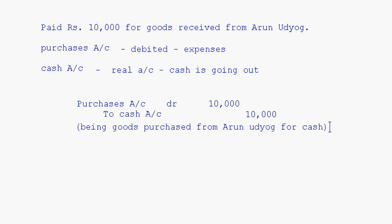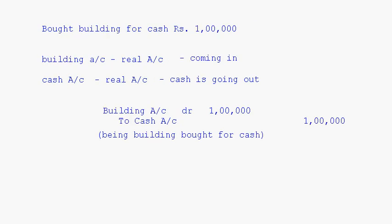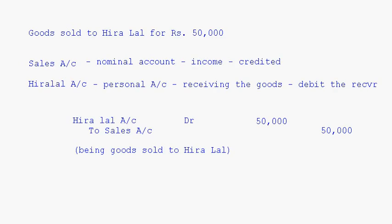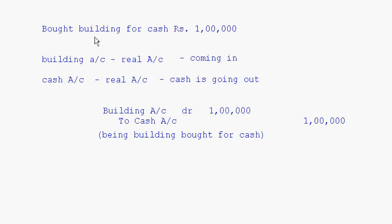We have seen some 5 to 6 journal entries in this session. The first one: bought office furniture. Then goods sold to Hira Lal — that is a credit sales. Then buying a building, which is a cash purchase for an asset.